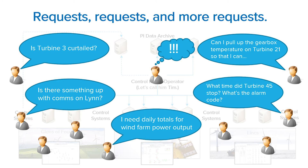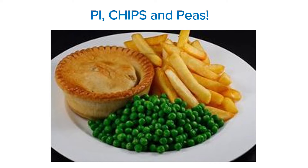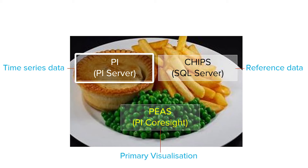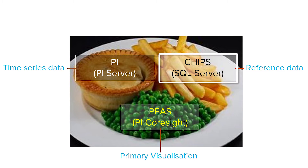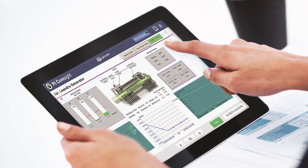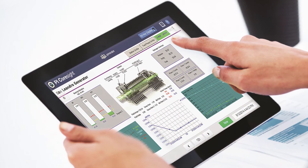But a secondary objective was to provide information to other business users. Why have we called this Pi Chips and Peas? These are working names we gave during a project over the last few months. Pi clearly refers to our PI Server. Chips is the name we give to a SQL Server which stores attribute and reference data, and the primary visualization using PI Coresight we call Peas.